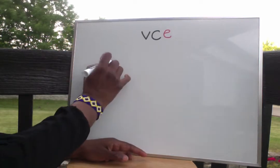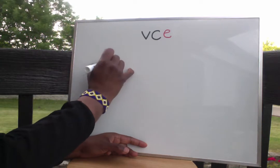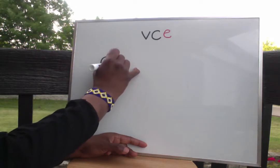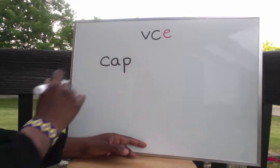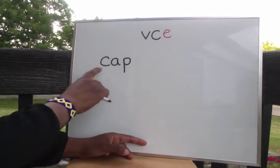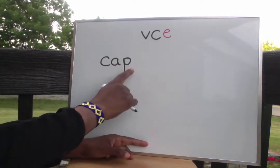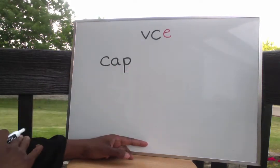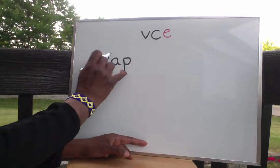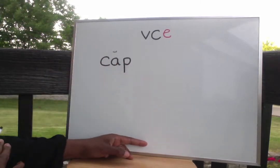If I have this word here — three letters: C, A, P — cap. This is making a short vowel sound.